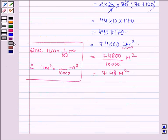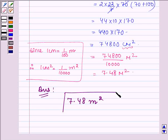Therefore our answer is the area of sheet required in square meters is 7.48 m². So this completes the session. Bye and take care.